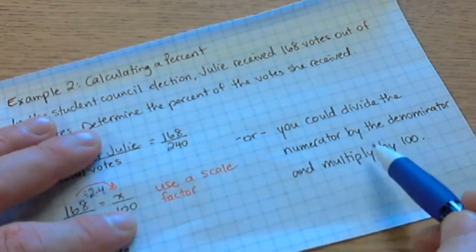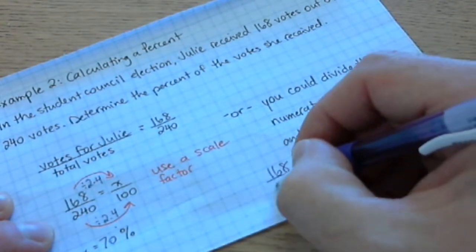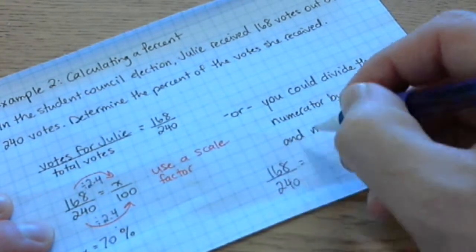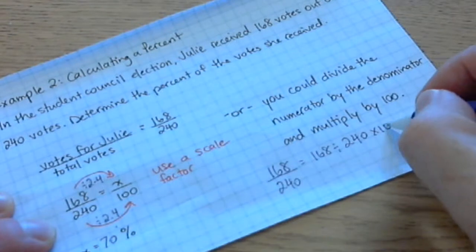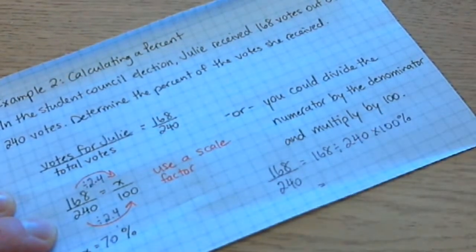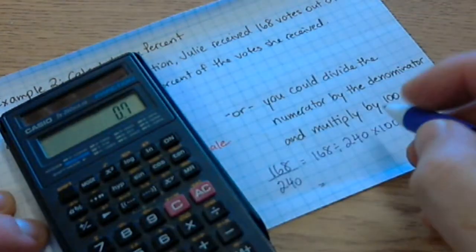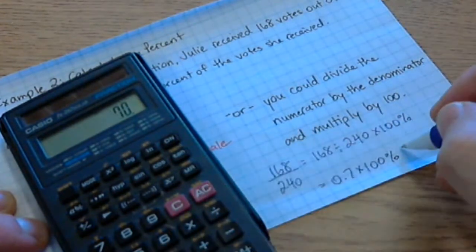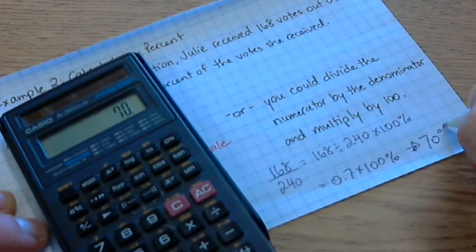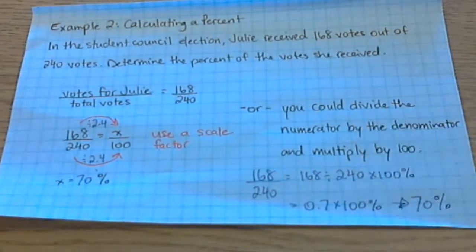Or, what it says here: you just divide the numerator by the denominator and multiply by 100. So to calculate the percent of 168 out of 240, we say 168 divided by 240, then multiply by 100 percent. 168 divided by 240 equals 0.7, and then multiplied by 100 percent equals 70 percent. So a bit of recognition on diagrams and recognizing the three forms — and Julie gets 70 percent.